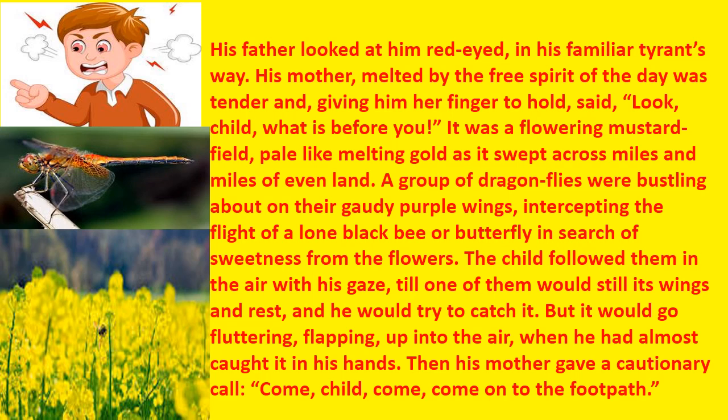His father looks at him in the same familiar way, like a strict and stern tyrant. His mother, in the happy mood of the fair day, gives him her finger to hold and says 'see, look what is there before you' — a typical adult strategy to distract the child. She shows him a mustard field, so full of yellow plants it looks pale with melting gold, stretching over miles and miles of land.